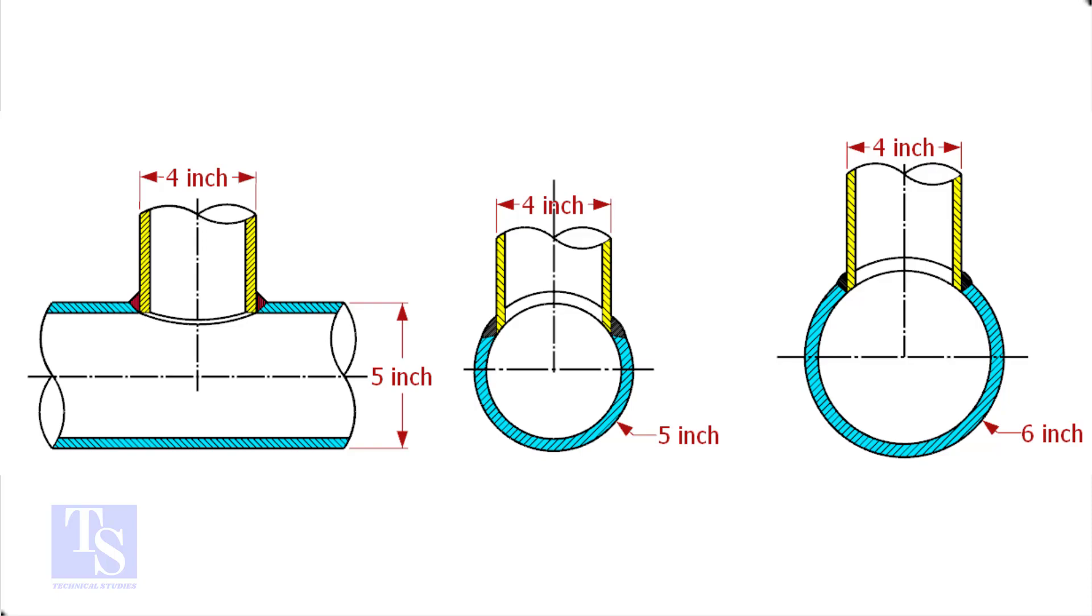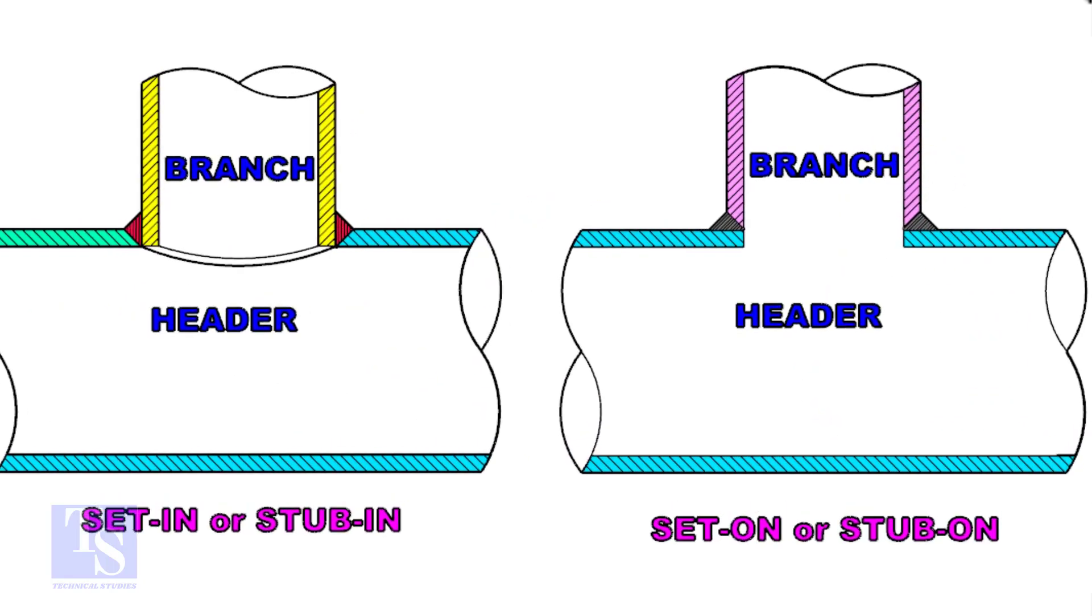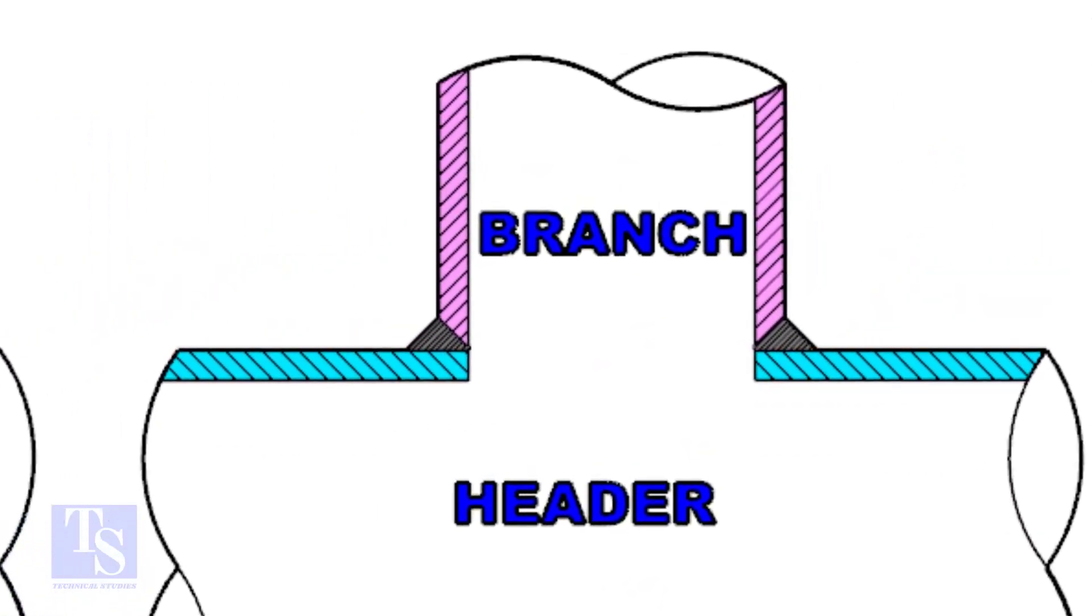Watch the section side view carefully. Check the stub-on view. The branch pipe sits on the header.